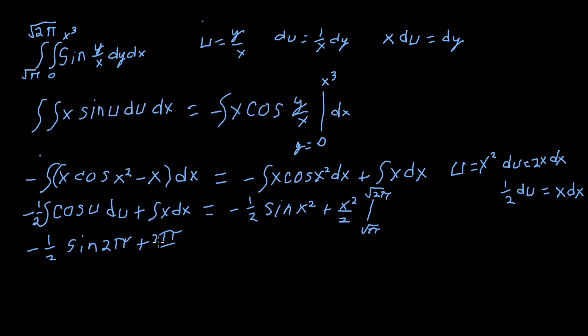So minus negative 1/2 sine x squared of the square root of x will become x—I'm sorry, it'll become pi—2 pi plus x squared of the square root of pi will be pi over 2.